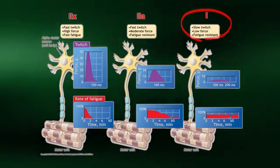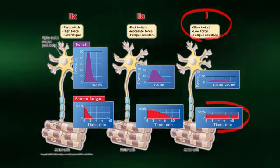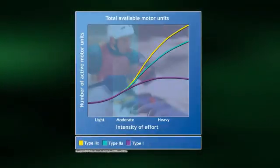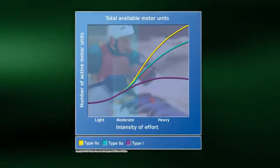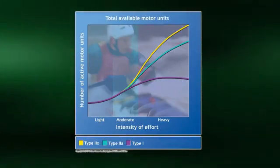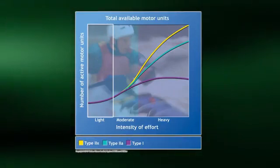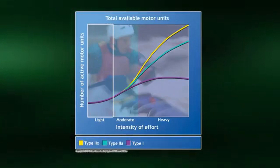On the other hand, type 1 fibers generate a much weaker force, but are more resistant to fatigue. Let's look at how the various muscle fiber types are recruited during exercise of an increasing intensity. At the onset of exercise, when the workload is light intensity, the type 1 fibers will be the primary fiber type recruited.